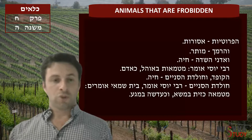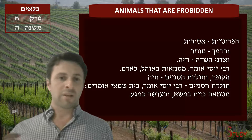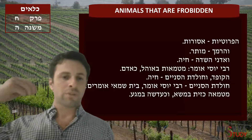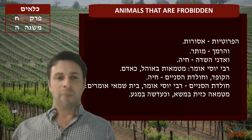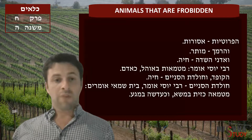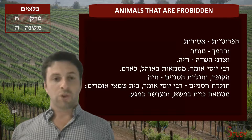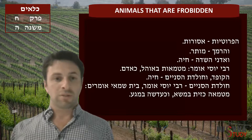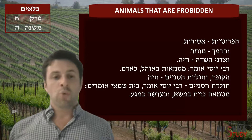When it comes to tumat masa — if you're not touching it but just bearing the load — for example, you're carrying a bunch of towels and on top of them on your shoulder there's a dead mouse — if it was a dead bear on top of you, you would become tamei because you're bearing the weight of that dead animal. But if it's a mouse and you're not touching it, just bearing the weight, you won't become tamei. There's a certain humrah when it comes to a nevelah, a dead corpse.